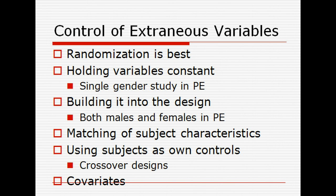How do we get rid of noise in the data and reduce error in studies? If you can do randomization, it's always best. You can also hold variables constant — for example, looking at a single gender versus mixed genders — but that doesn't necessarily have practical application. You can also build it into the design by including both males and females, so you won't have a gender effect.